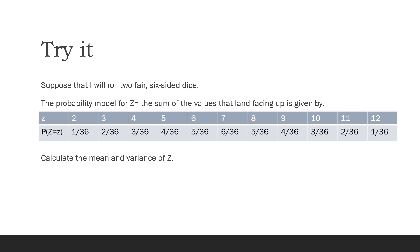Now it's time for you to try one. Stop the video for a minute and try calculating the mean and variance of the random variable z. Start the recording back up when you're finished.